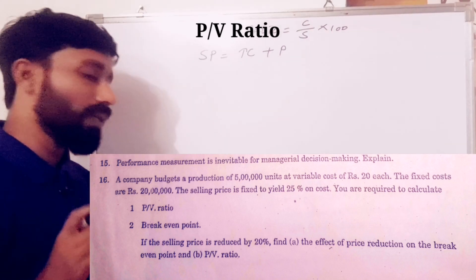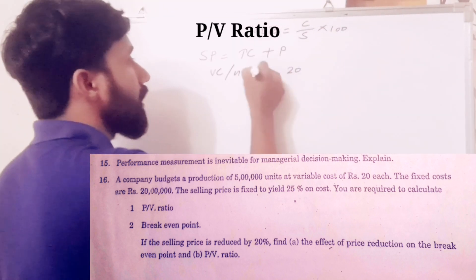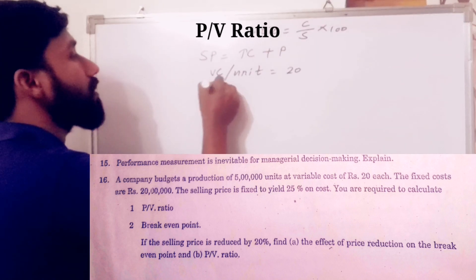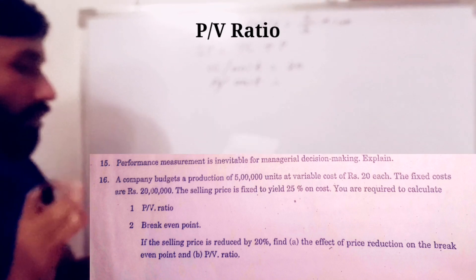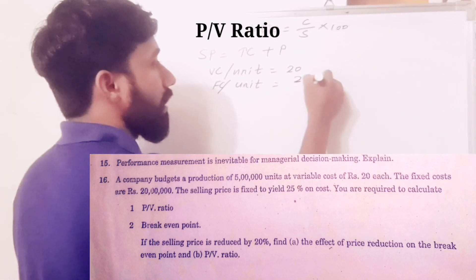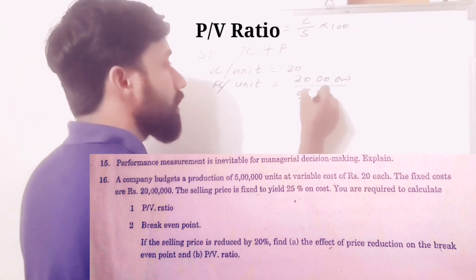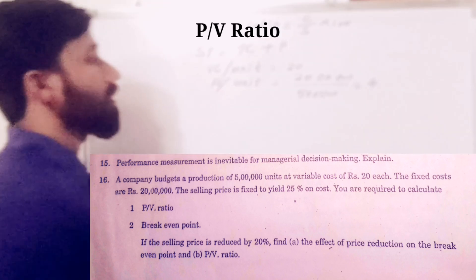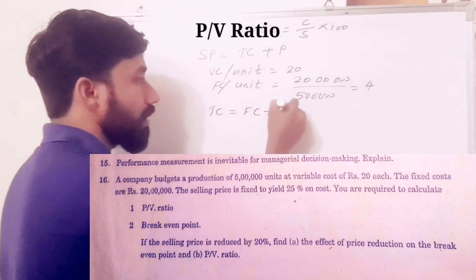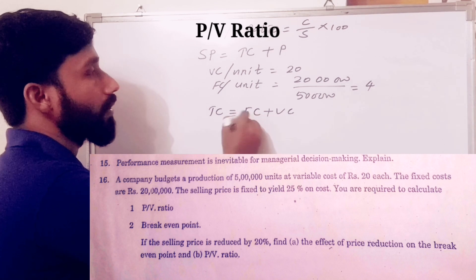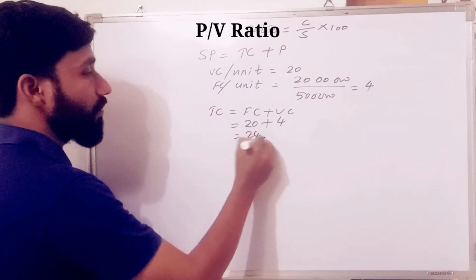Variable cost per unit is equal to Rs 20. Fixed cost per unit: we calculate it as fixed cost of 20 lakhs divided by 5 lakh units produced, giving Rs 4. Total cost per unit equals variable cost Rs 20 plus fixed cost Rs 4, which equals Rs 24.